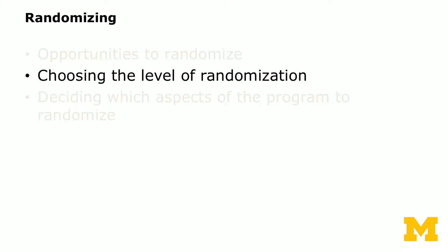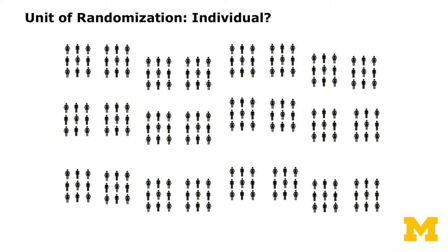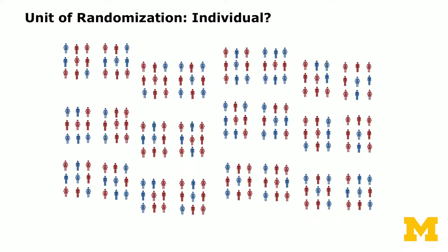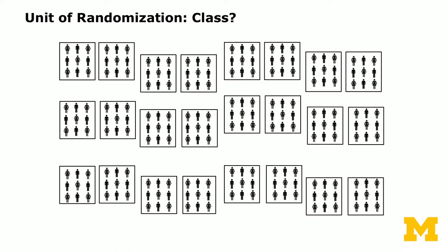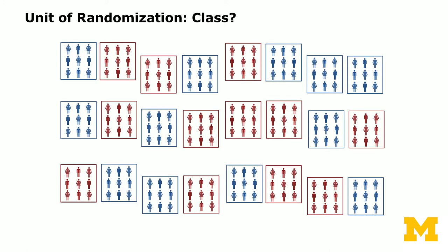Now we'll talk about choosing the level of randomization. The level can be at the individual level. For instance, if your budget isn't sufficient to cover all students, you can randomly select half of the students to receive free school lunch — that's randomization at the individual level. Or you can randomize at a cluster level, such as the class level, where some classes are randomized into receiving an extra teacher and others are not, enabling you to evaluate the effect of having an additional teacher.